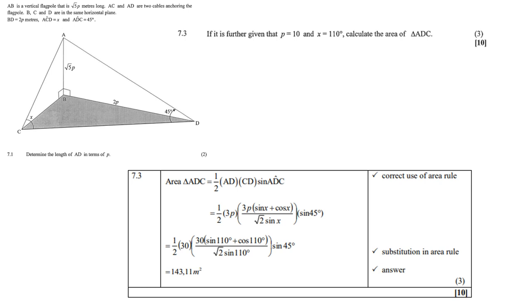So, the sine of 45. Once you've done that, then replace x with 110 and replace p with 10. And the rest is calculator work. And you should get 143.11 meter square.